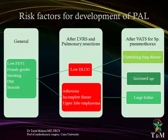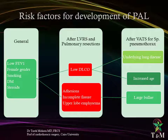Risk factors for development of persistent air leak include general and local factors related to procedures. General factors include low forced expiratory volume in the first second (FEV1), female gender, smoking, diabetes mellitus, and the use of corticosteroids. After lung volume reduction surgery and pulmonary resections, leaks increase in patients who have low carbon monoxide diffusion, intraoperative adhesions, incomplete fissure, and upper lobe emphysema. Factors that may increase leaks after video-assisted thoracoscopic treatment of spontaneous pneumothorax include underlying lung disease, old age, and large bullae.